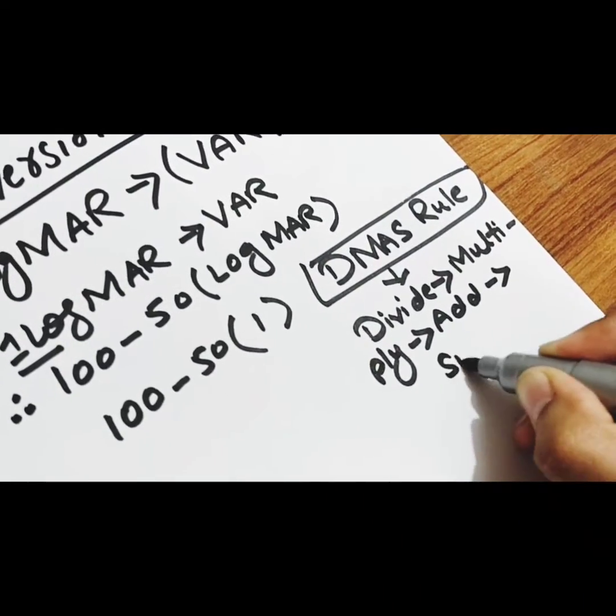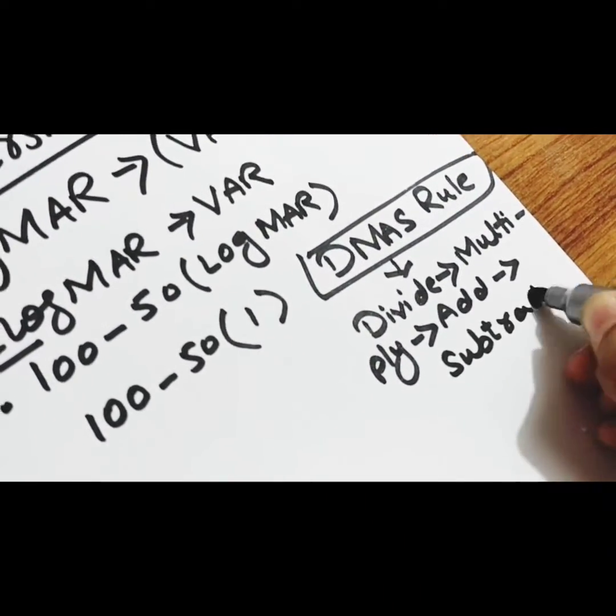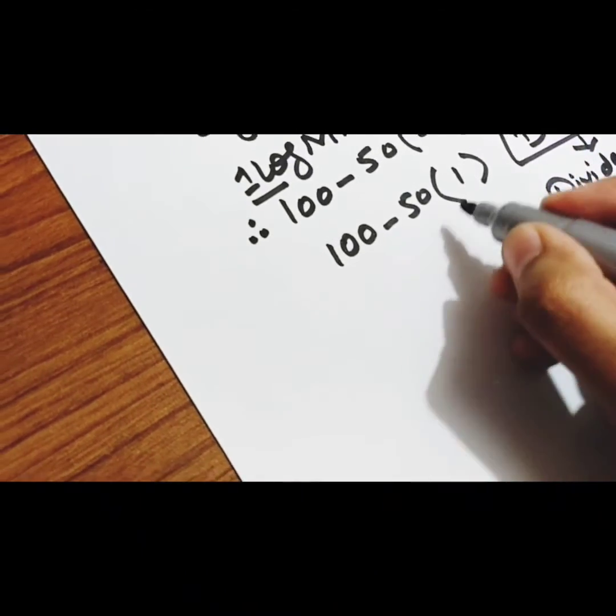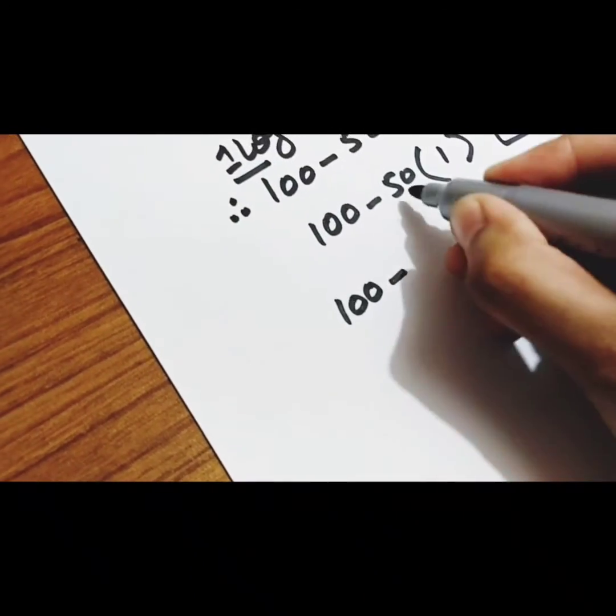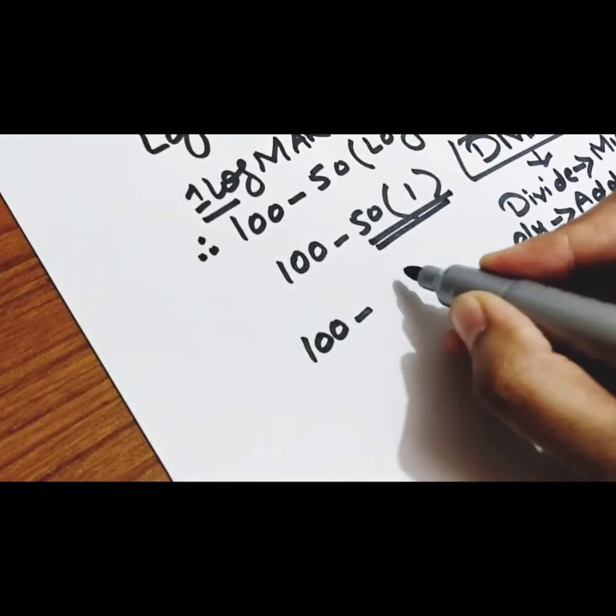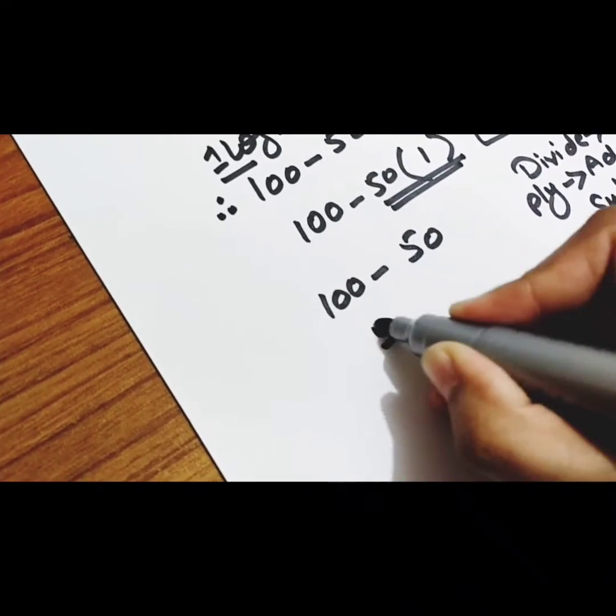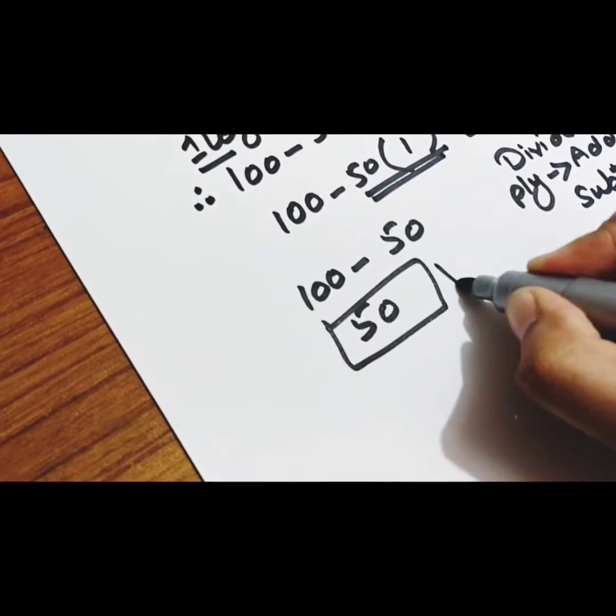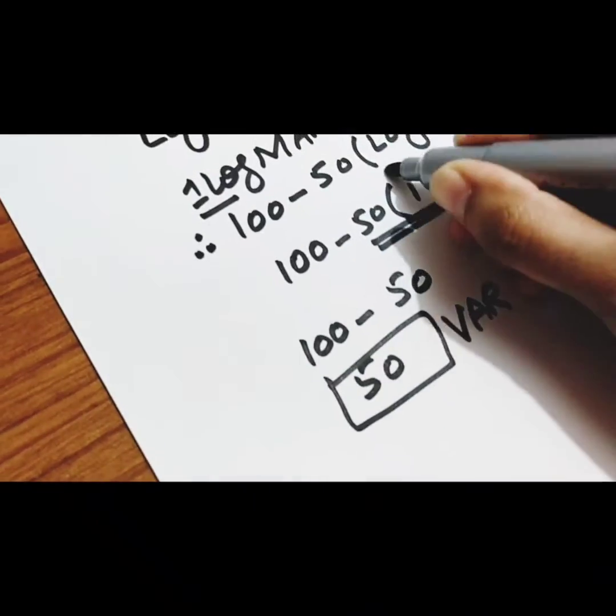Firstly, we will multiply 50 with 1, it will become 50 and then we will subtract 100 minus 50 is equal to 50 VAR.